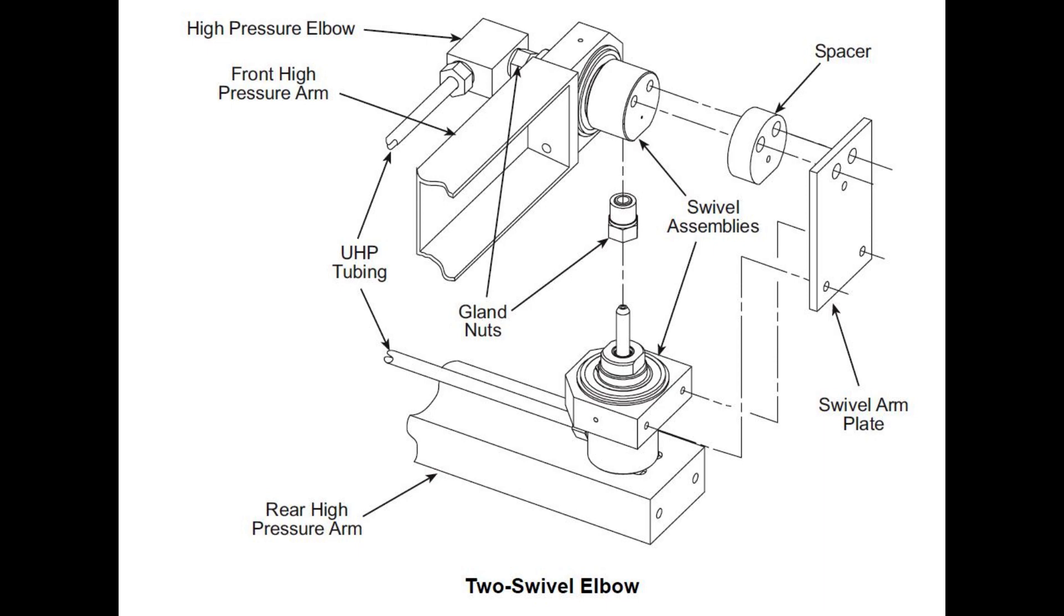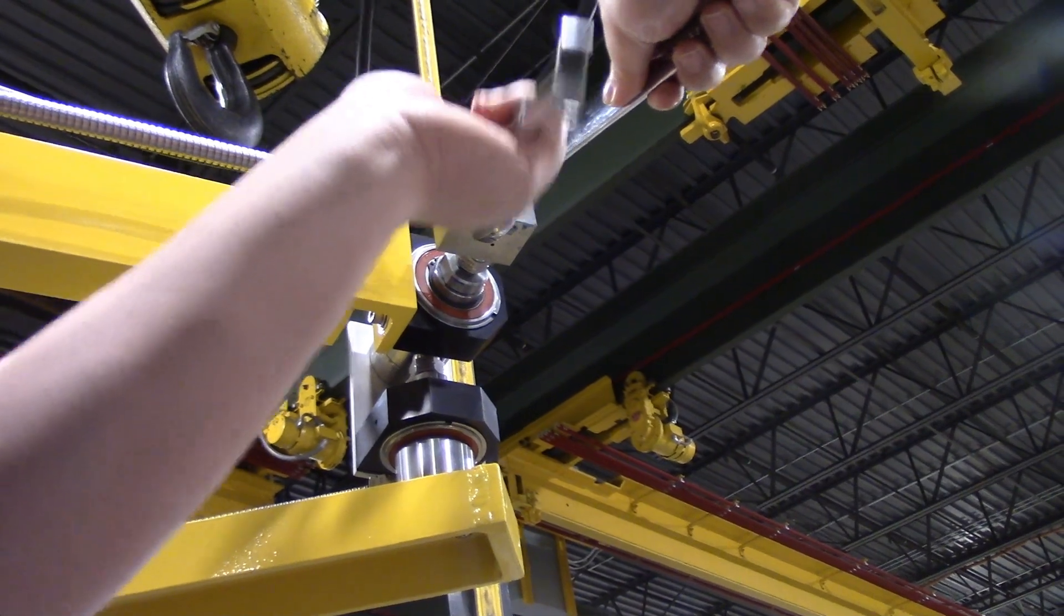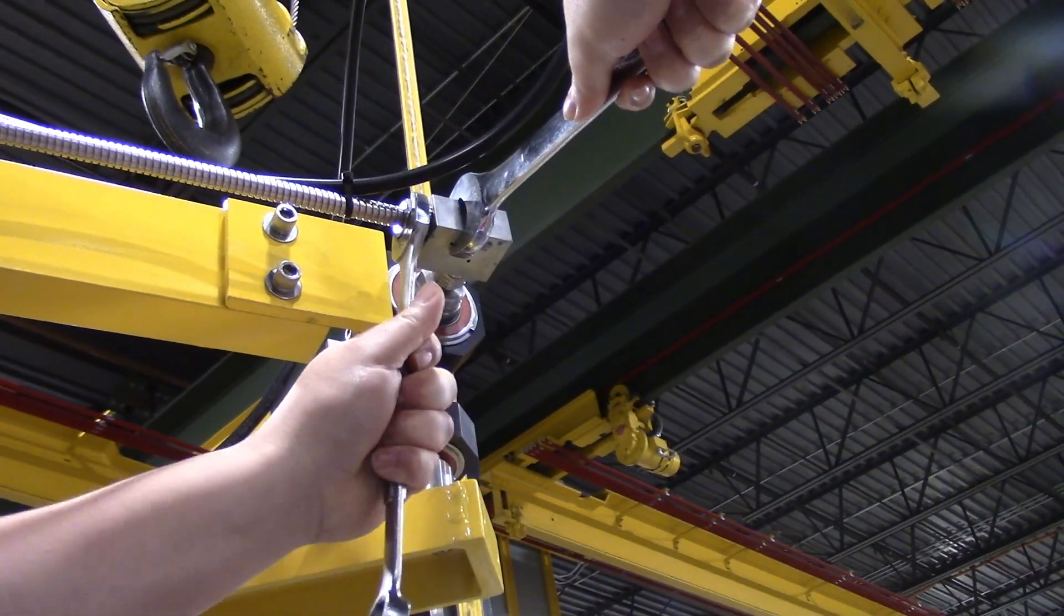If installing on a high rail motion system, install the fasteners that secure the swivel assembly to the high pressure arm and other mounting components. Connect the ultra high pressure tubing to the swivel assembly and tighten.